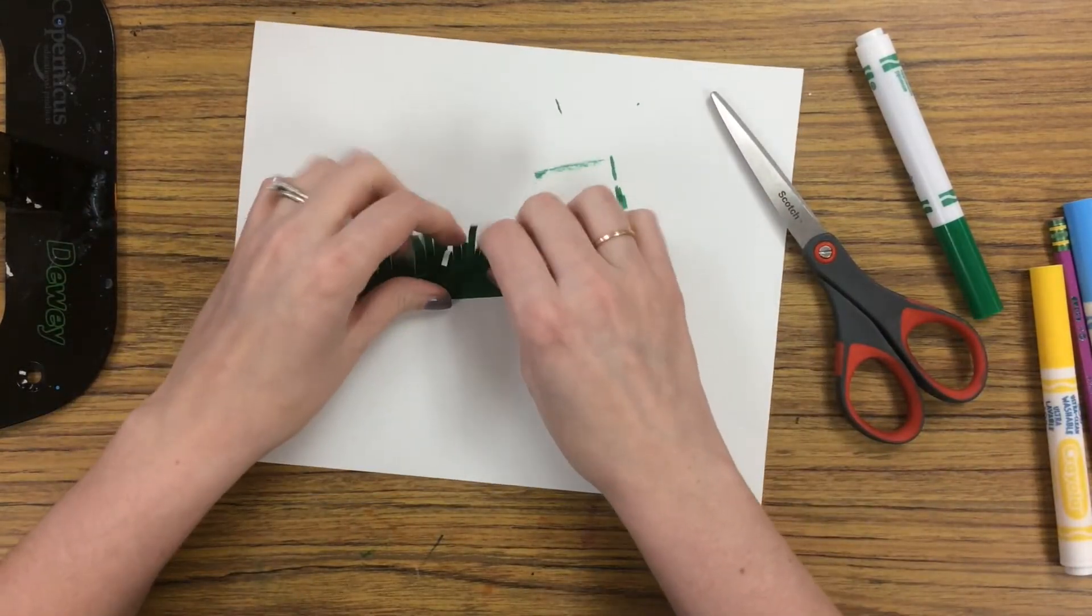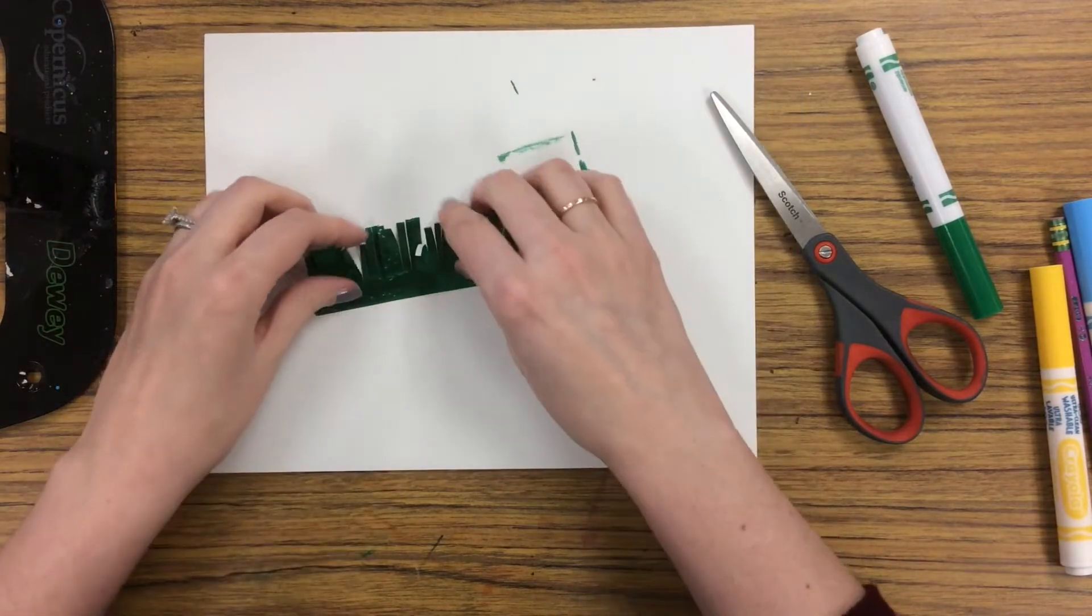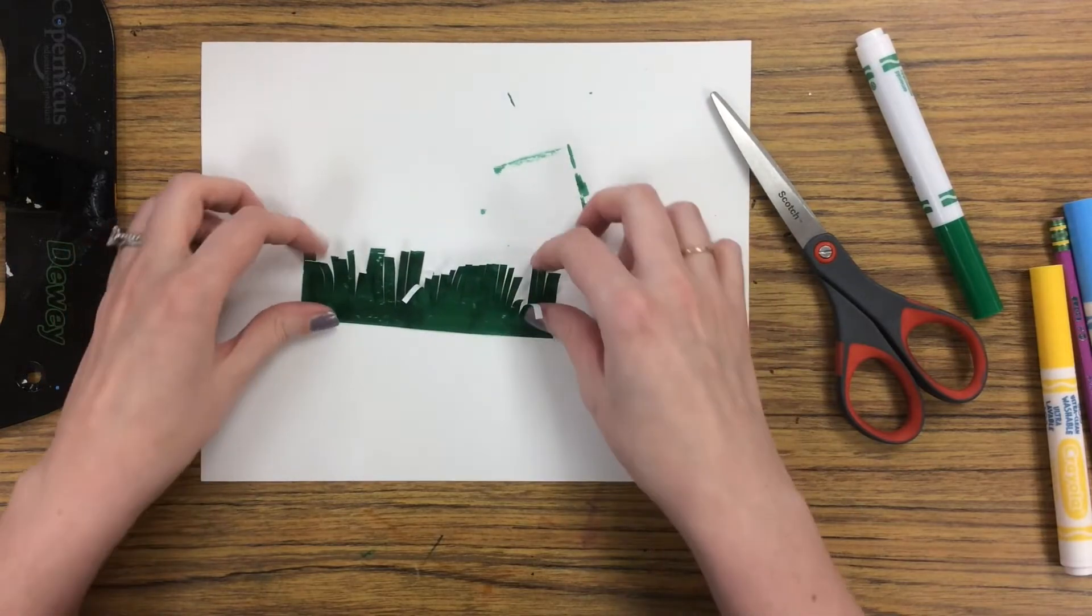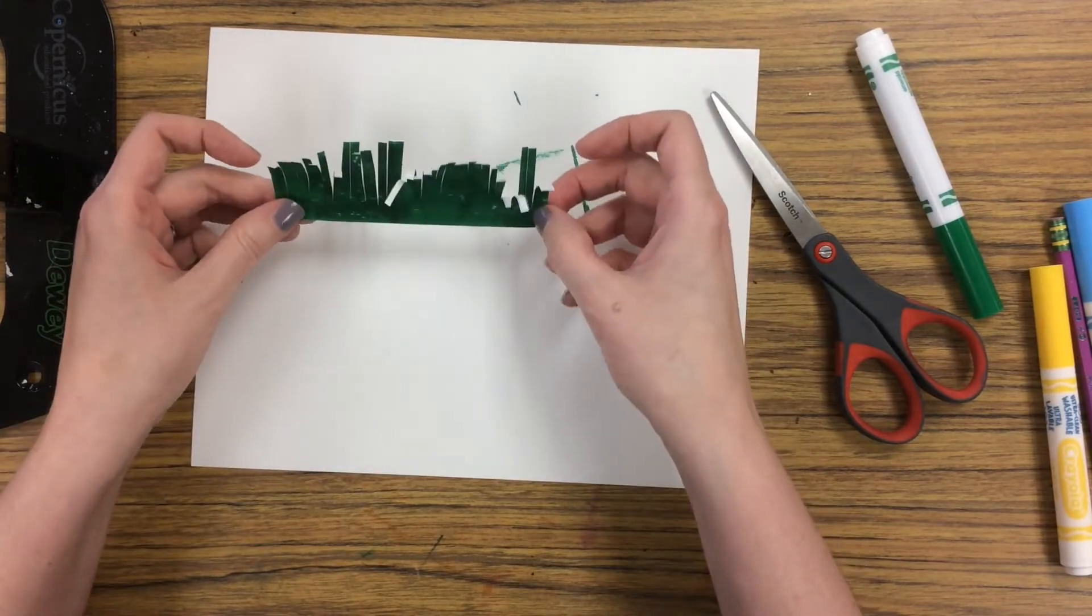And then you've got your fringe. And it's kind of fun to pull some further back, some kind of in the middle, and some going back. It makes it look a little more realistic like grass.